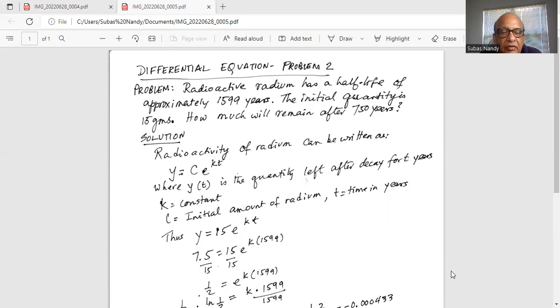Now 7.5 grams is equal to... 15 is the initial quantity, and it has a half-life of 1599 years. That means from 15 grams, it will go to 7.5 grams. So 7.5 = 15e^(k×1599).